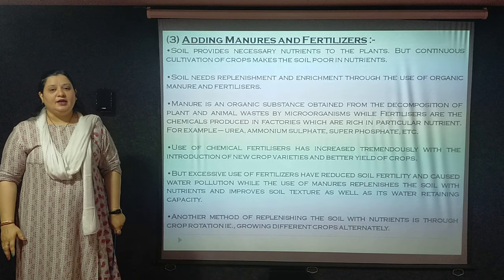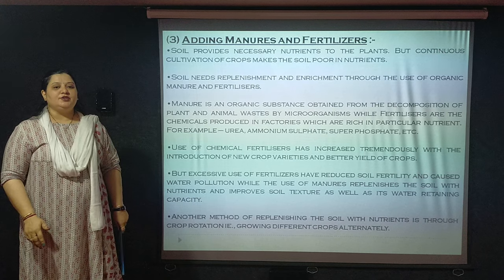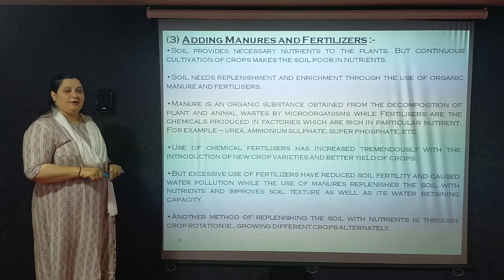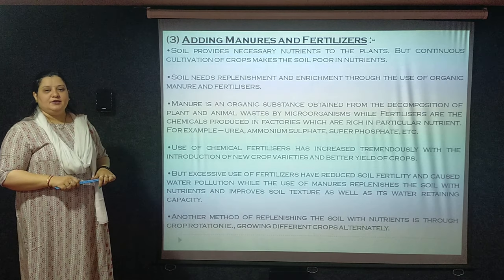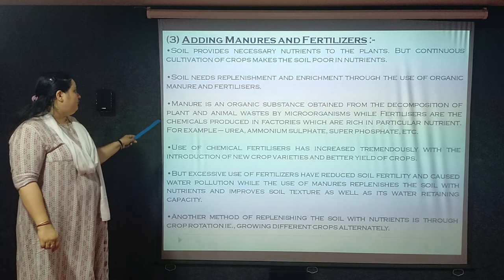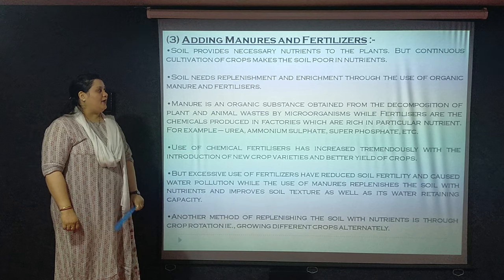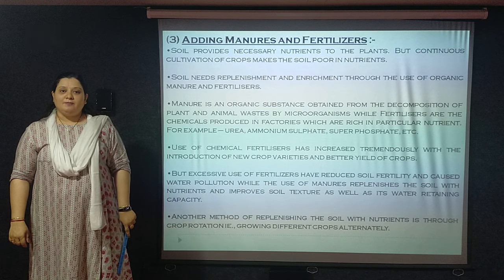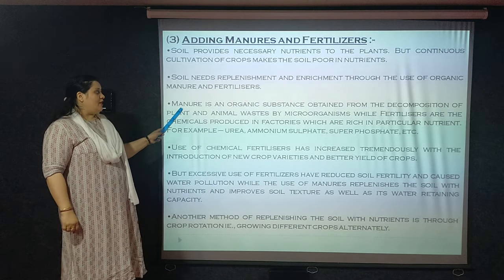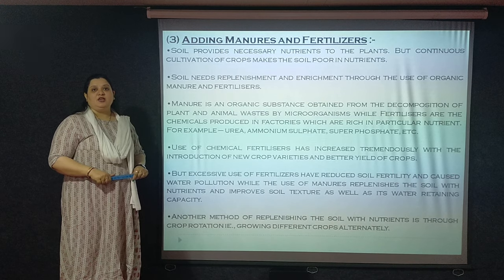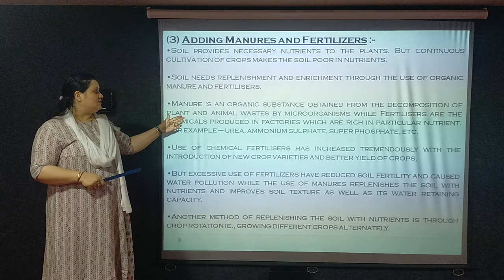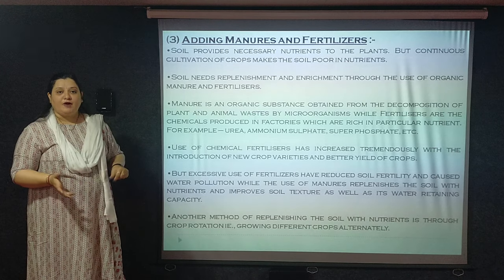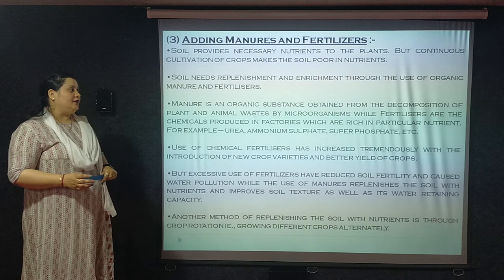Soil has its own nutrients, but we need to add a few more manually for plant growth. Now, how are manures and fertilizers prepared? Manures are organic materials prepared by the decomposition of plant and animal waste by microorganisms. As you have learnt last year, this is called vermicomposting. However, decomposition and vermicomposting take too much time, so the production of manures is not very fast.